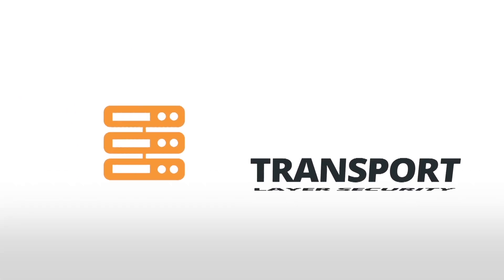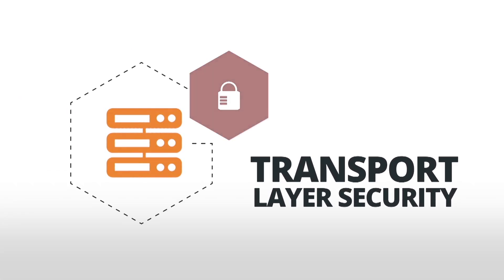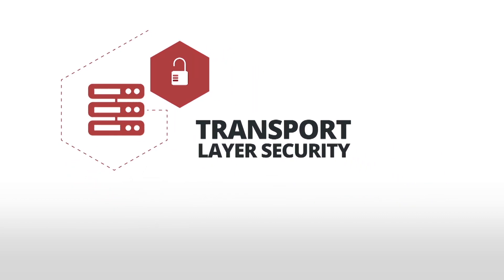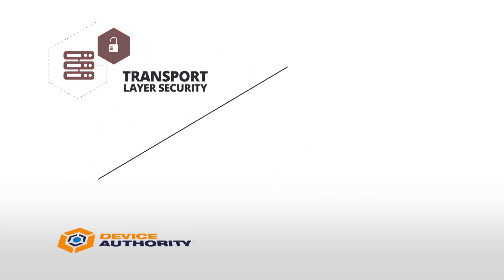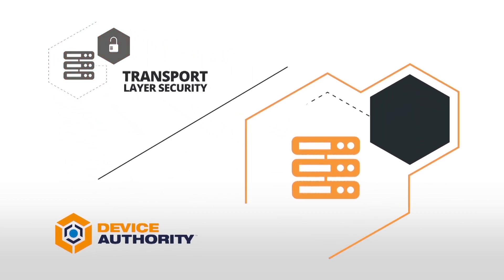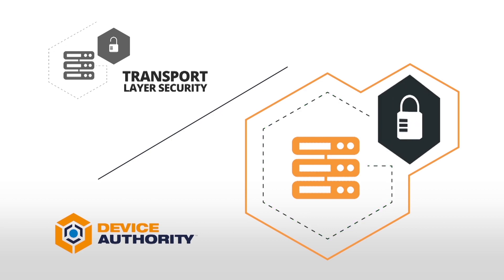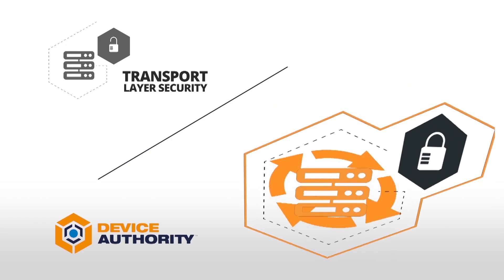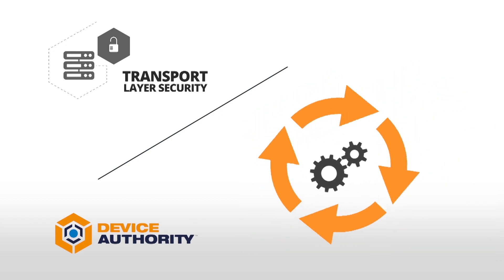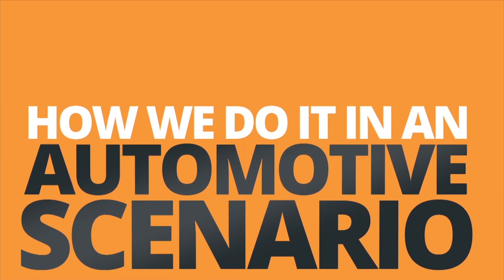Using traditional security methods such as transport layer security, data is often vulnerable to attack or exposure throughout its lifecycle. Device Authorities' data-centric approach persists the security around the data itself, delivering integrity and trust to the journey of all IoT data without disrupting any existing business processes. Here's how we do it in an automotive scenario.